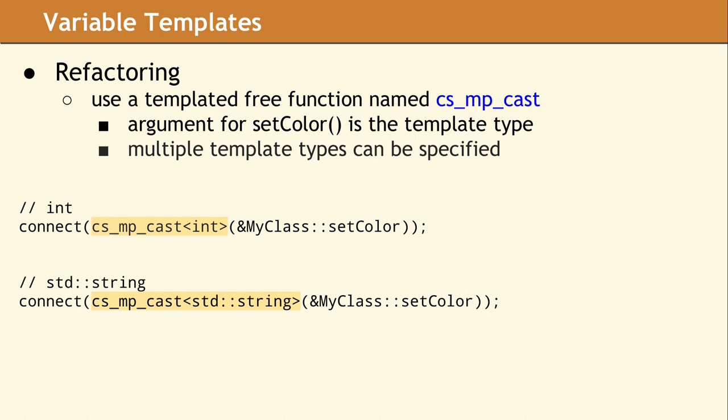Our first idea was to change the static cast and use a templated free function. We named it CSMPCast, since the function is replacing a static cast. With the new design, the method arguments for setColor are specified as normal template parameters.